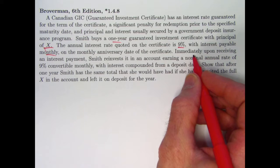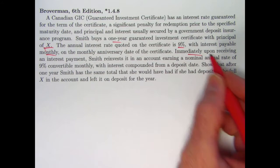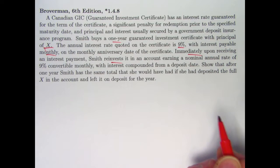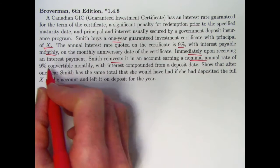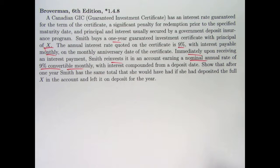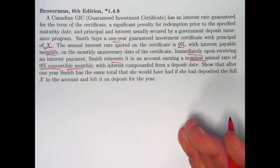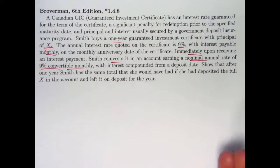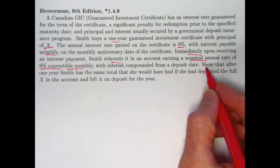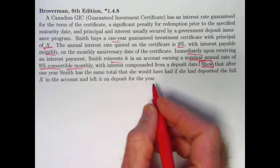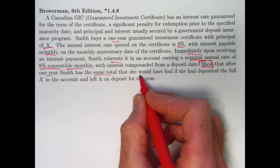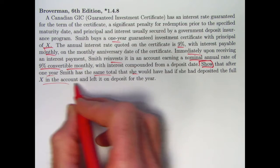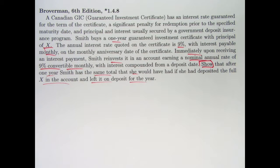However, Smith does something kind of odd. Immediately upon receiving the interest payment, she reinvests it in an account earning a nominal annual rate of 9% convertible monthly. That's phrased slightly differently than the first one, but it really is the same thing. This is a 9% nominal rate compounded monthly. The monthly rate is going to be 9% divided by 12 in both cases. This is a demonstration problem that after one year, Smith has the same total that she would have if she had deposited the full X into the account and just left it there for a year.